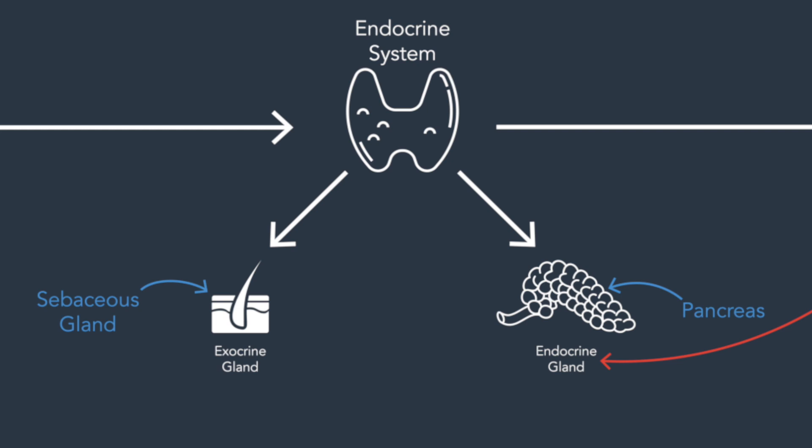Sebaceous glands release oil from around the hair follicles in your skin. It's an important part of your body's homeostatic balance, but it is not part of the endocrine system. They are exocrine glands, and that means that they release their product to the outside world. Endocrine glands, however, release their product into the bloodstream. So the pancreas is an example of an endocrine gland — when it releases insulin into the bloodstream to help control the sugar levels in the blood, that is an endocrine process.